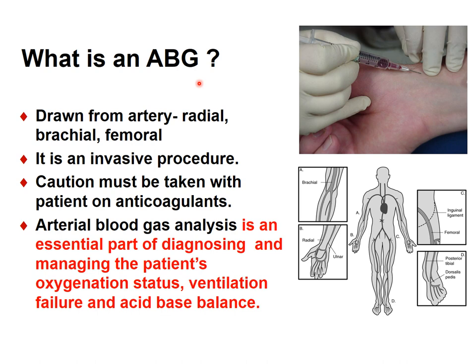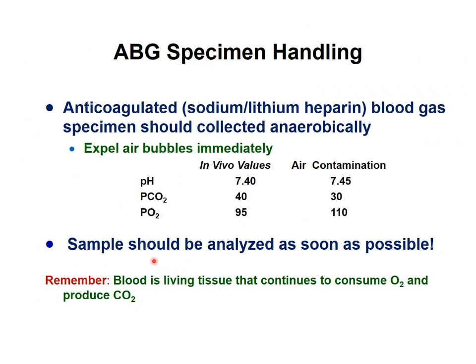For acid-base analysis, we withdraw blood from an artery — mainly the radial, brachial, or femoral artery. That's an invasive procedure and you have to be very cautious, especially in patients taking anticoagulants. Arterial blood gas analysis is an essential part of diagnosing and managing the patient's oxygen status, ventilation failure, and acid-base balance.